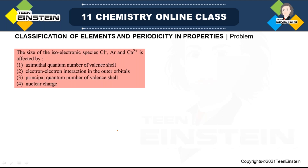The problem we are going to discuss is related to isoelectronic species, which we have already seen in the last class. The question asks about the size of isoelectronic species — three species are given: chlorine with a single negative charge (Cl⁻, which is chloride), argon (neutral), and calcium two-plus (Ca²⁺, a metal cation). We have to find which property affects the size of these three species.